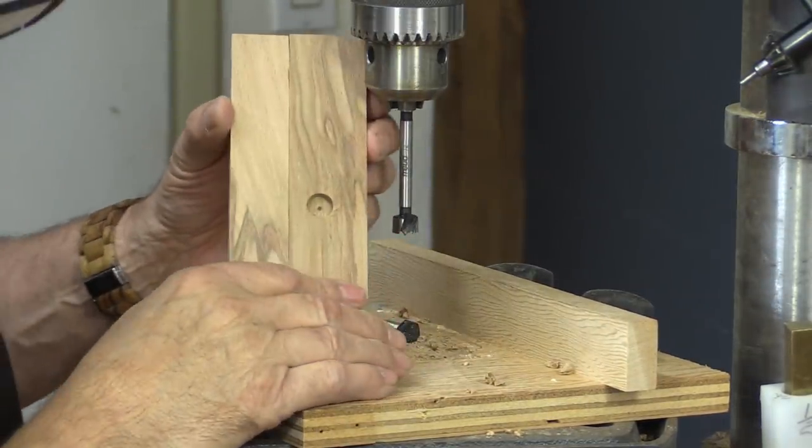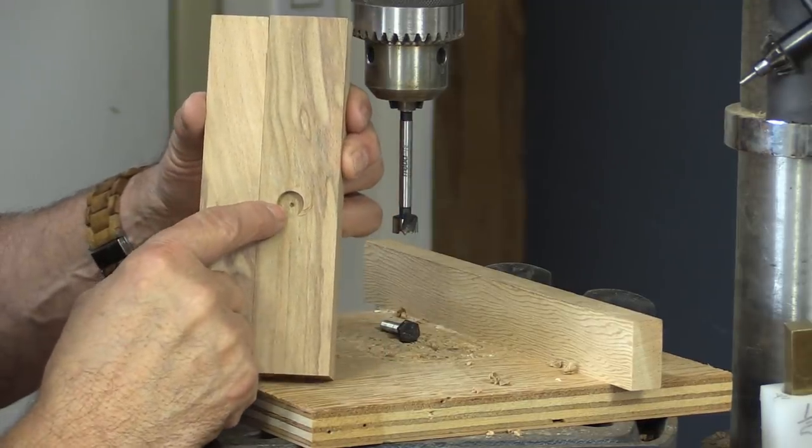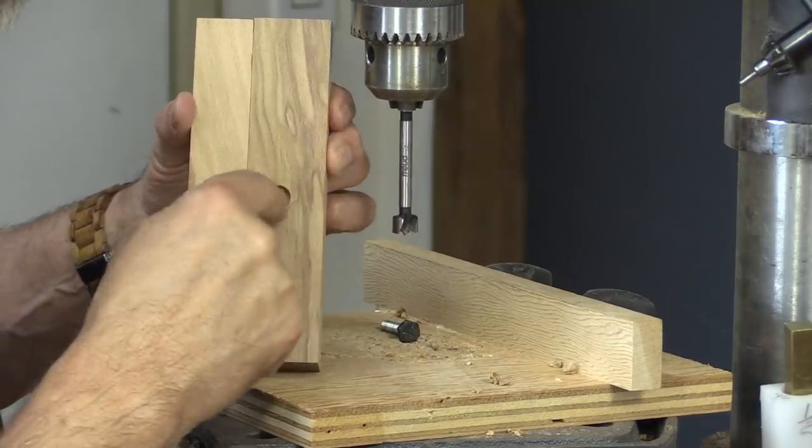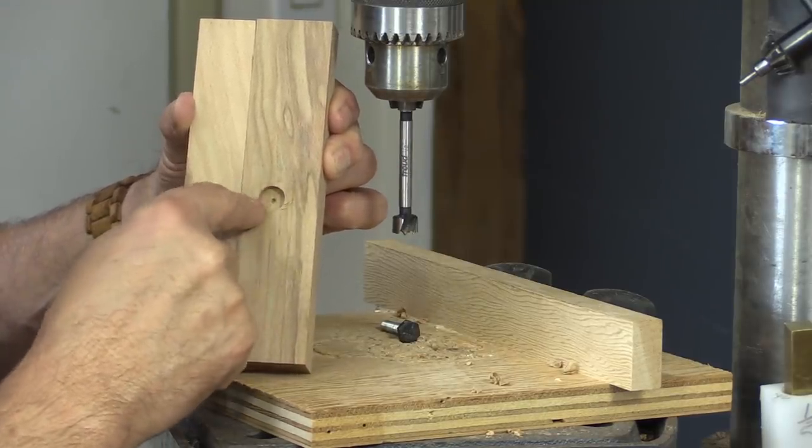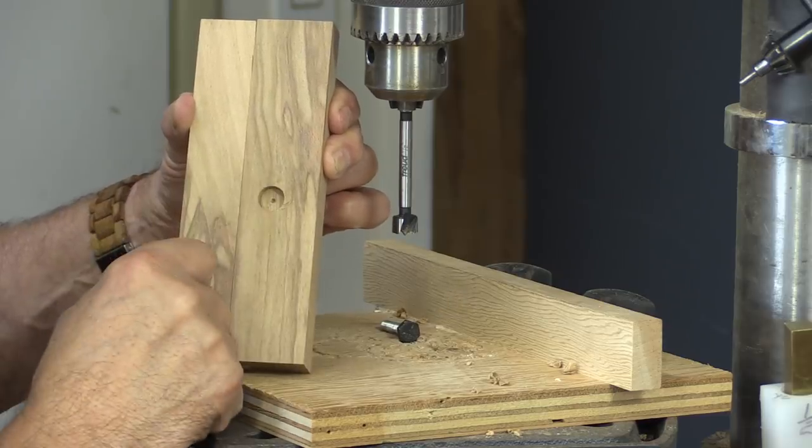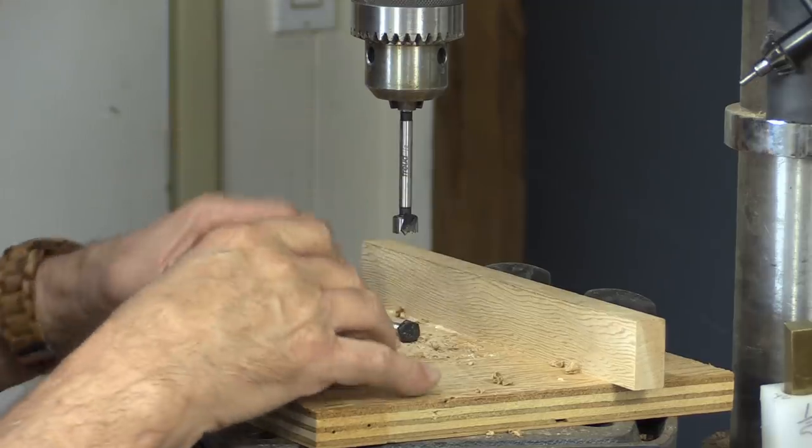Now the reason we drill a Forstner bit first, you can see that I already have a mark in there, so that when I take this bit out, I can put my through bit in—the bit that I'm going to use for the through hole—and it will be automatically centered because I've already got the mark from the Forstner bit in there.